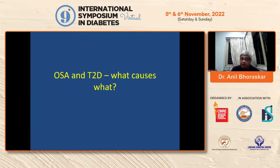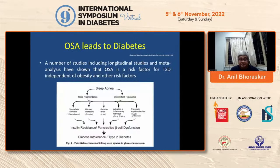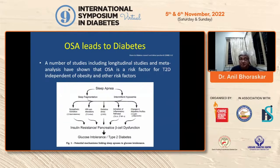What causes what — it is like a chicken and egg problem: whether OSA comes first or type 2 diabetes comes first. It is a bi-directional relationship. OSA leads to diabetes. A number of studies, including longitudinal studies and analyses, have shown that OSA is a risk factor independent of obesity and other risk factors. Even if the patient is not obese, or doesn't have abdominal obesity, he can still have OSA, which itself is an independent risk factor.